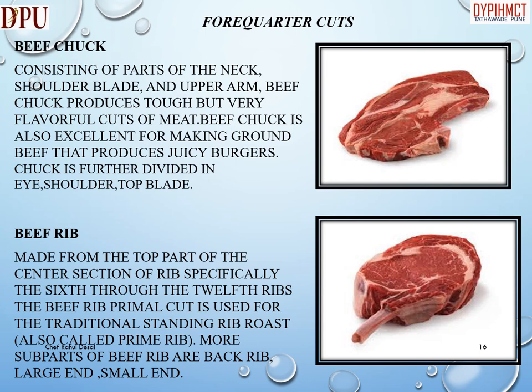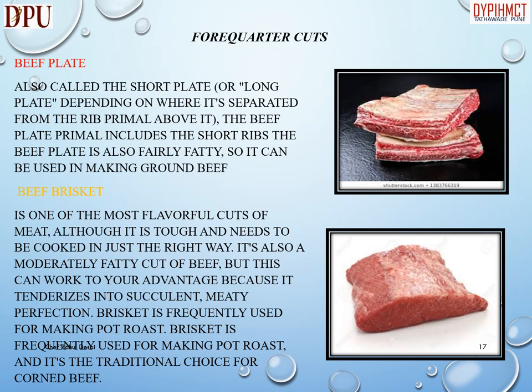Beef rib is made from the top part of the center section of ribs, specifically the sixth through the twelfth ribs. The beef rib primal cut is used for the traditional standing rib roast, also called prime rib. Sub-parts of beef rib are: back rib, large end, and small end.